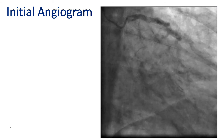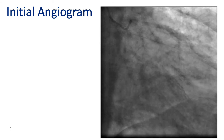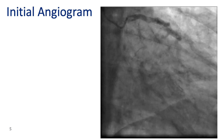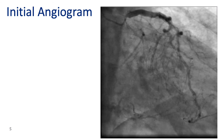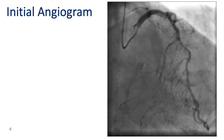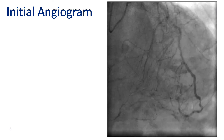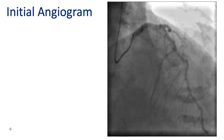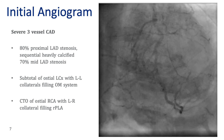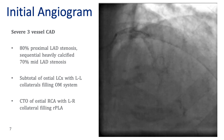Here in the RAO Caudal view, you can appreciate a subtotal occlusion at the ostial left circumflex with left-to-left collaterals filling an OM. You can also appreciate left-to-right collaterals filling an RPLA system with the right being CTO'd proximally. In the RAO Cranial view, you can better appreciate the sequential heavily calcified proximal and mid-LAD stenosis, and in the AP Cranial view we can see the sequential heavily calcified 70% to 80% stenosis within the proximal and mid-LAD.